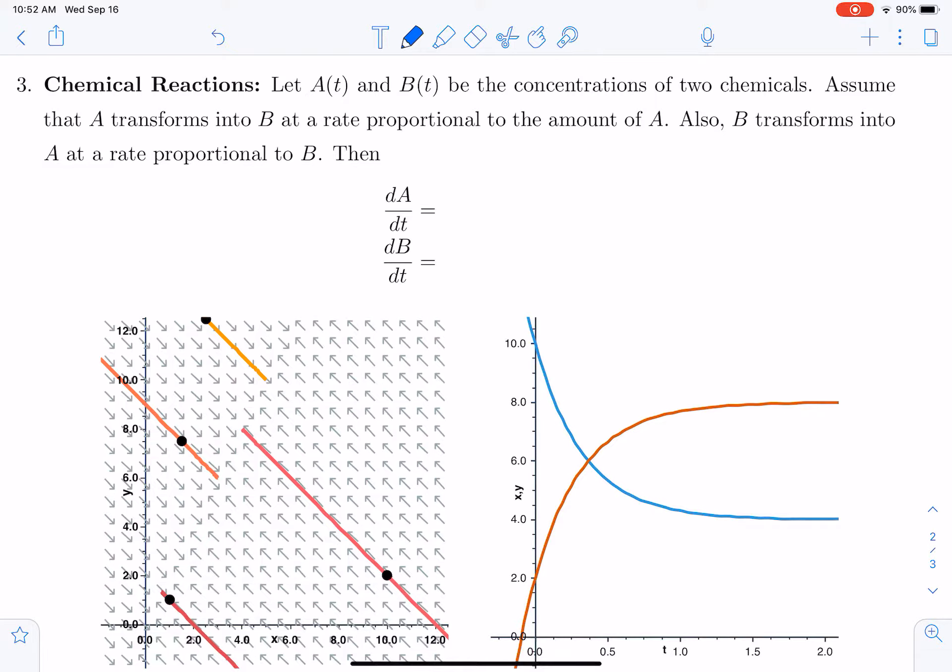This is called a first-order reversible reaction. So we have A is going to transform into B at a rate proportional to A, we'll call the rate k1, and then B transforms back into A at a rate proportional to B, and we call that rate k2.